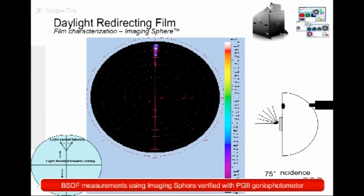At 60 degrees and 75 degrees, more and more light falls near the window. What I showed was just normal incidence — no skew angles. When you do this at 145 times 145 directions, you can generate the KLEMS format BSDF — a 145 by 145 matrix. We verified the measurements both from the calculated BSDF standpoint and at Lawrence Berkeley National Laboratory using the PGII goniophotometer.